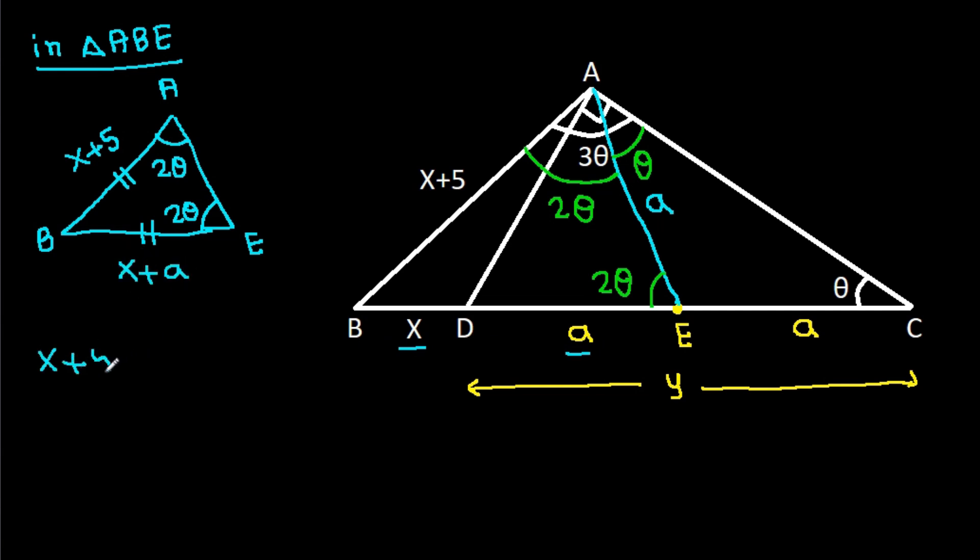So x plus 5 is equal to x plus a, and x will get cancelled. So we get 5 equals a, so a is 5.